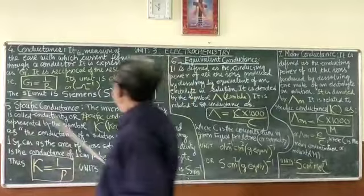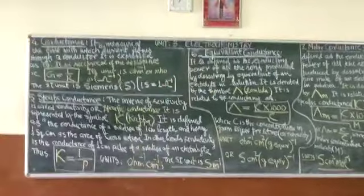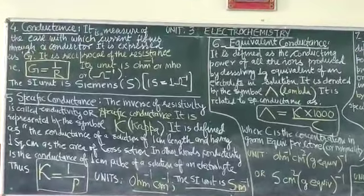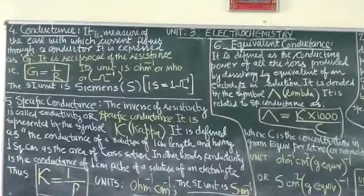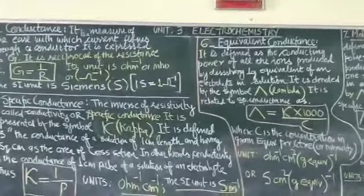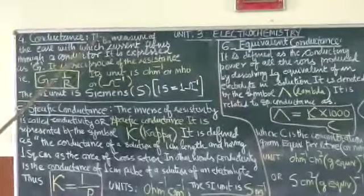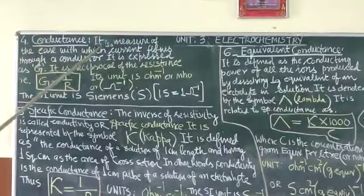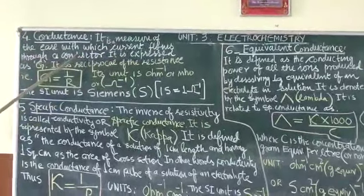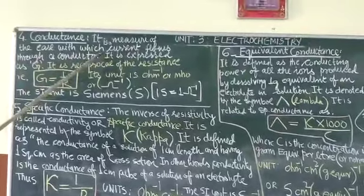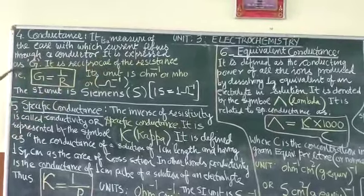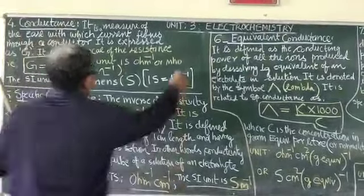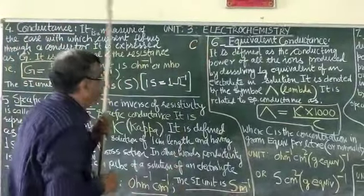Today, continuing with the same topic, that is important terms. The fourth important term is conductance or conductivity. Please see here. What is this? It is a measure of ease with which current flows through a conductor. It is expressed as capital G. Somewhere it is also expressed as C, so don't be confused.